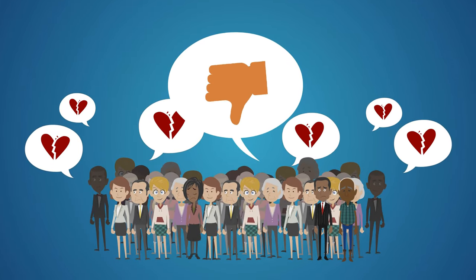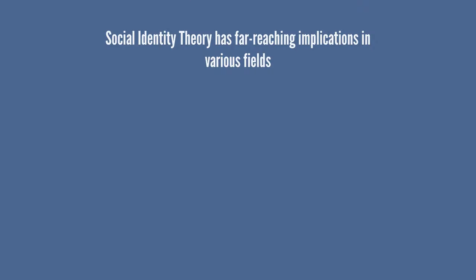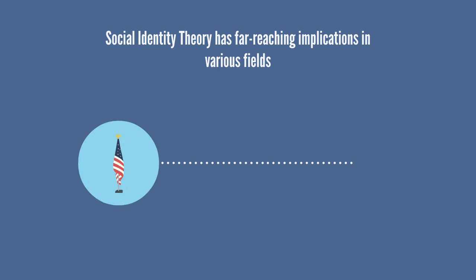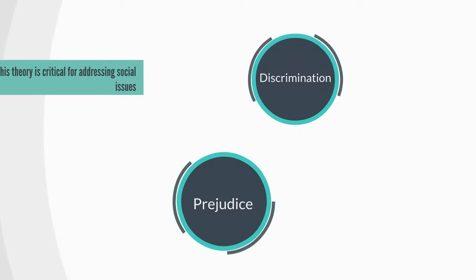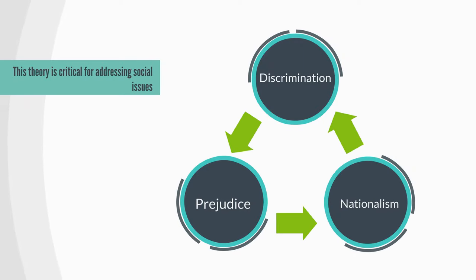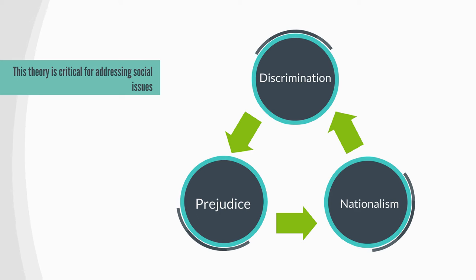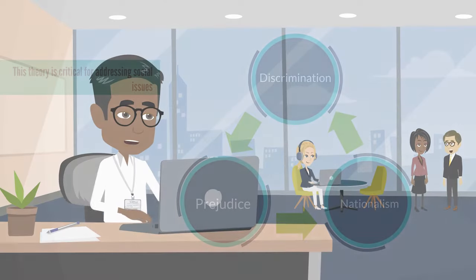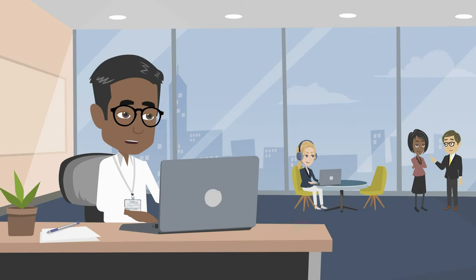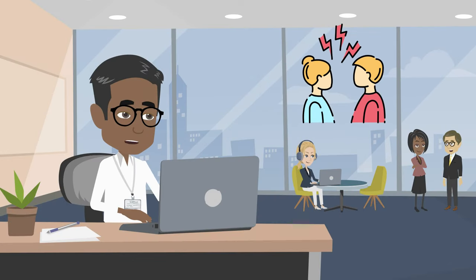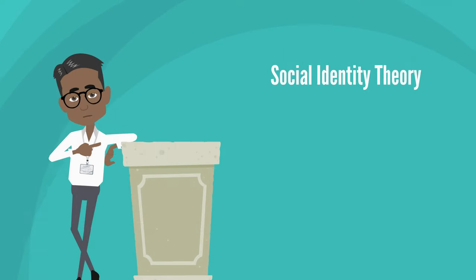Or they may mentally dissociate from it. Social Identity Theory has far-reaching implications in various fields, such as politics, marketing, and inter-group relations. Understanding this theory is critical for addressing social issues like discrimination, prejudice, and nationalism, as it offers insights into the psychological mechanisms underlying group behaviour and inter-group conflict.